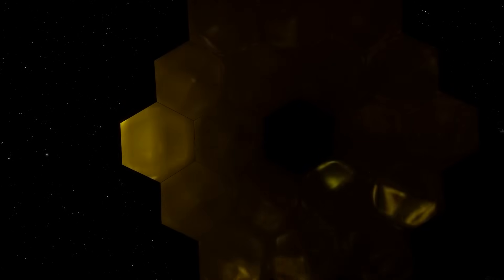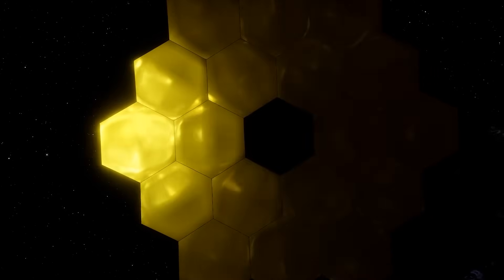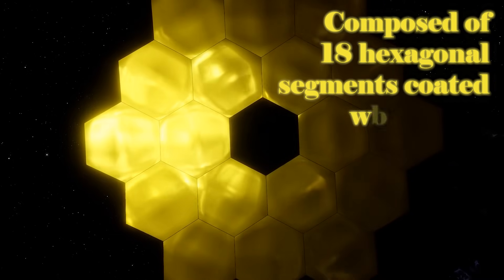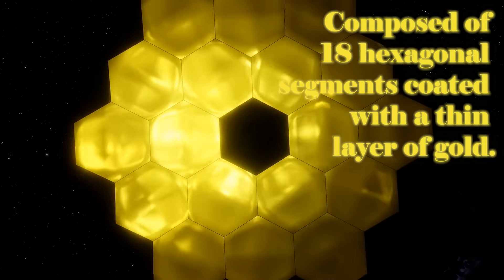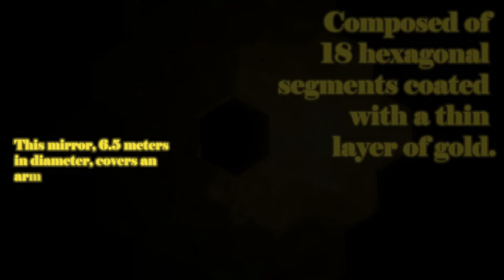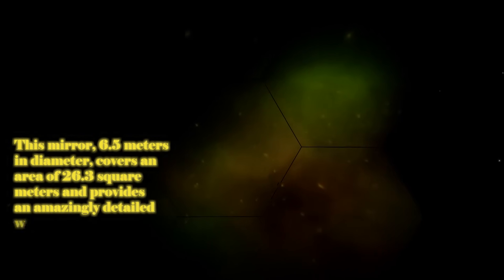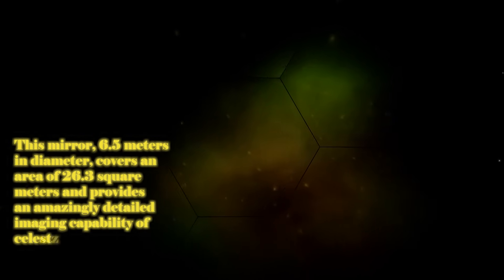The James Webb Space Telescope's primary mirror is a testament to innovative engineering, composed of 18 hexagonal segments coated with a thin layer of gold. This mirror, 6.5 meters in diameter, covers an area of 25.3 square meters and provides an amazingly detailed imaging capability of celestial objects.